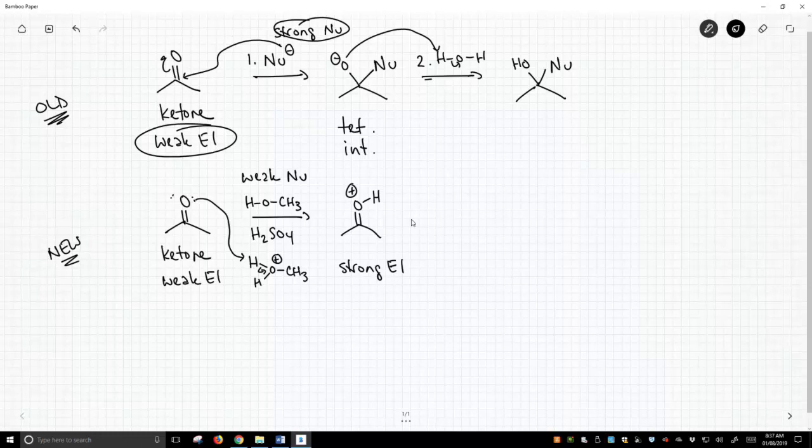And you might say, I don't see how that's a strong electrophile. Well, if we think of a resonance form, and I'm not going to draw the arrow, but we're going to break this CO-pi bond and put the electrons up on oxygen. And if we draw that resonance form, we'll now have two lone pairs on oxygen and a carbocation.